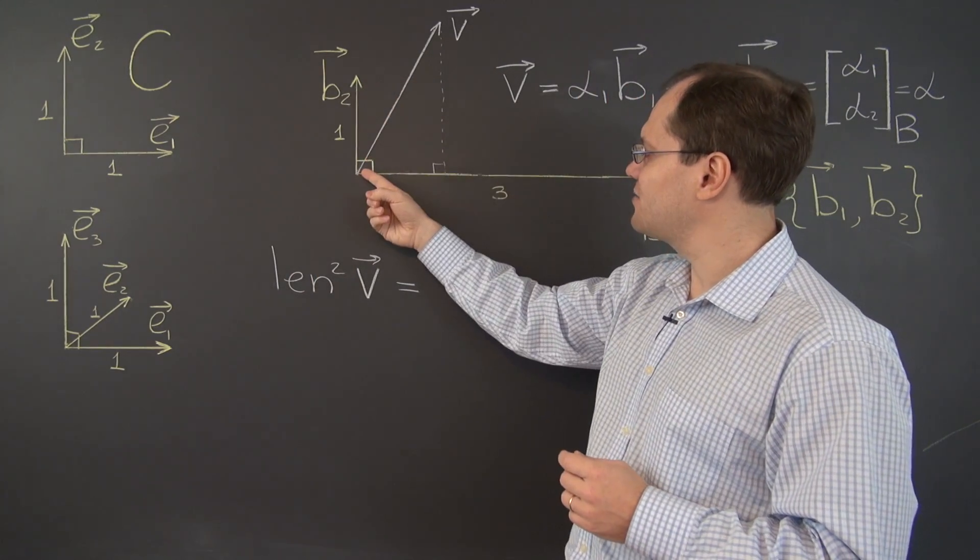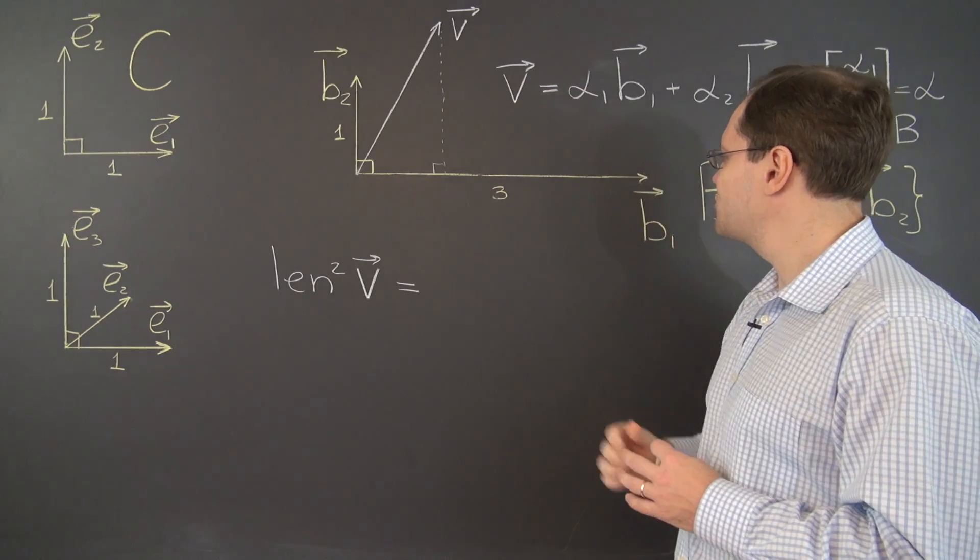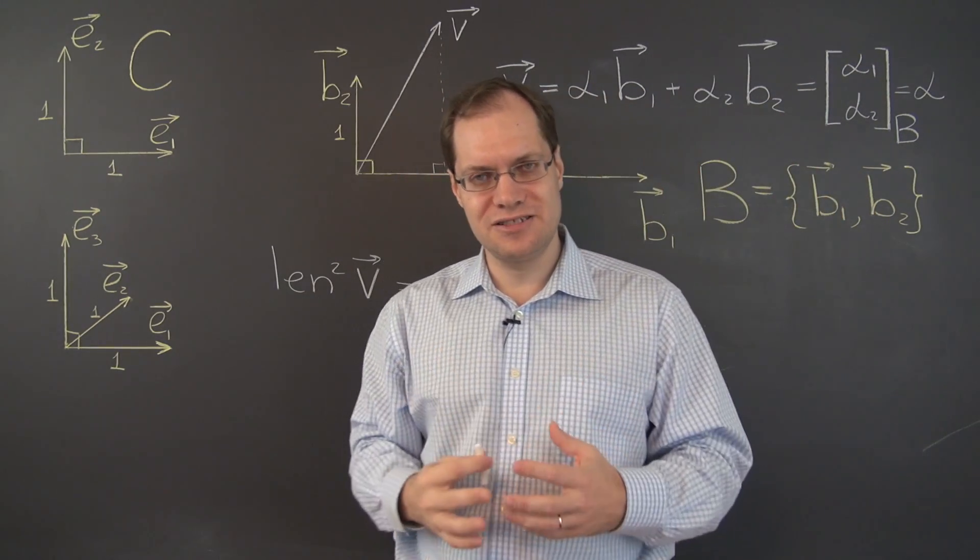One of them is still unit length, but the other one is length 3, which is what makes this basis not Cartesian.